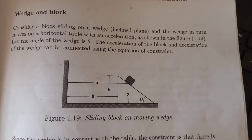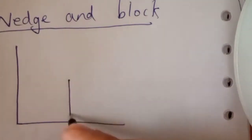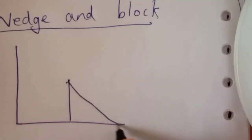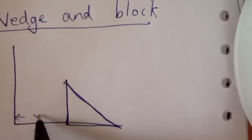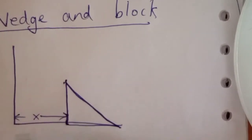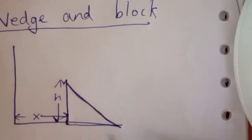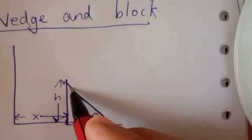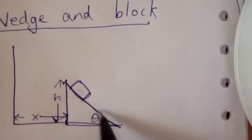In this example, the wedge and block. There is a wedge. This is a wall. The height is h. This is an angle of inclination. This is a block. This is a slide.